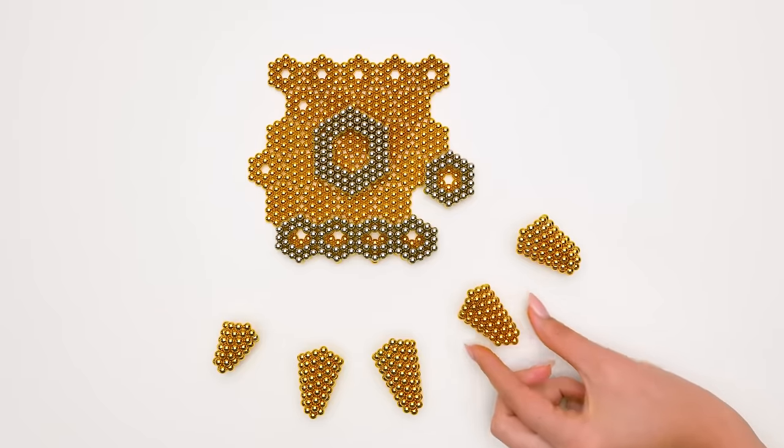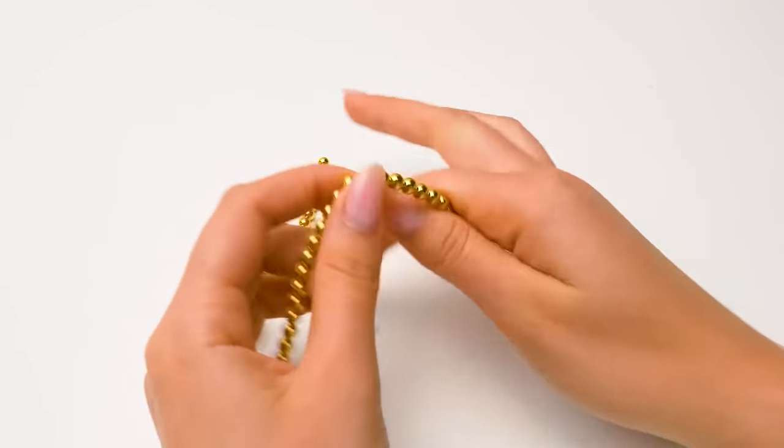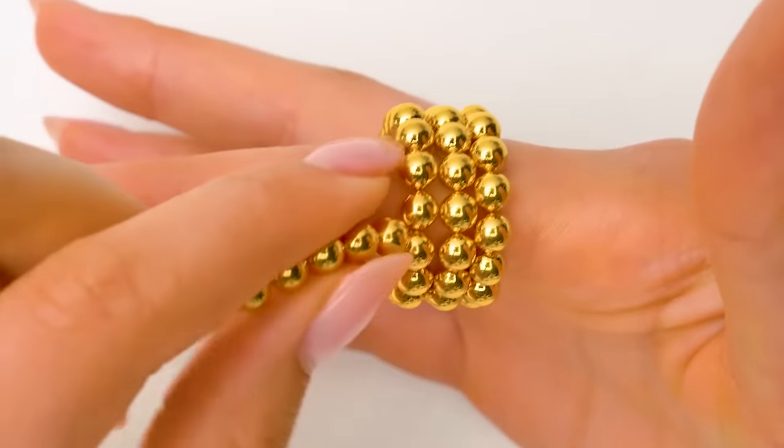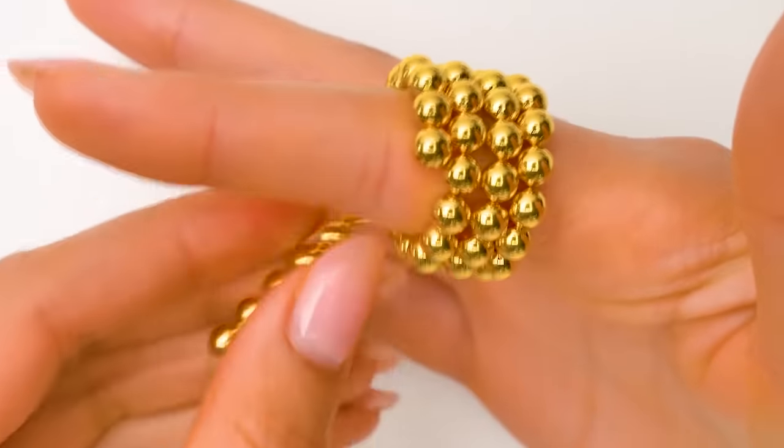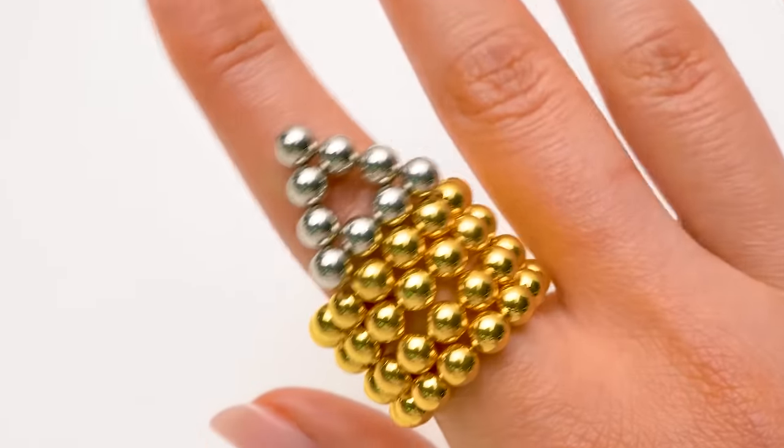Our gauntlet is almost ready! Right now, it's time to make rings. This way. Simply wrapping the chain around the finger. And here comes a small triangle.